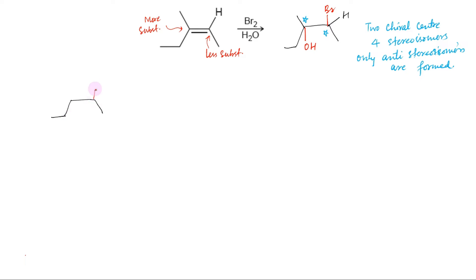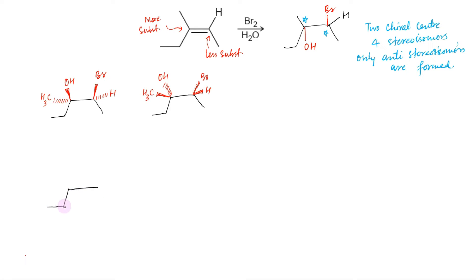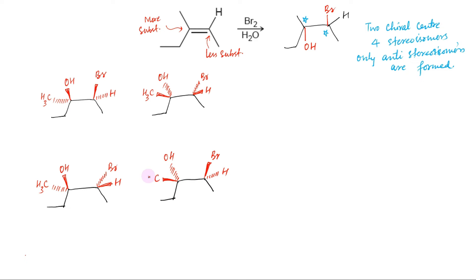These can be written as follows. In one, both bromine and OH will be above the plane, so that hydrogen and methyl will be below the plane. The second will have stereochemistry opposite to this one — that is, bromine and OH down the plane, so that hydrogen and methyl are above the plane. The third will have bromine down the plane and OH above the plane, meaning hydrogen will be above the plane and methyl down the plane. The fourth will have stereochemistry opposite to the third — bromine above the plane and OH down the plane, so that hydrogen is down the plane and methyl is above the plane. The first two are products of syn addition, whereas the last two are products of trans or anti addition.